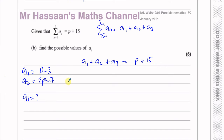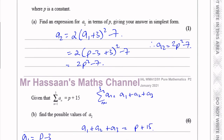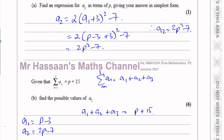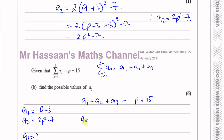We need a3 because a1 plus a2 plus a3 equals p plus 15. We'll use the recurrence relationship to find a3. So a3 equals 2 times (a2 + 3) squared minus 7. We use the same pattern but apply it for a3.